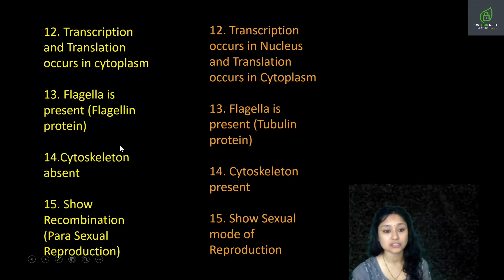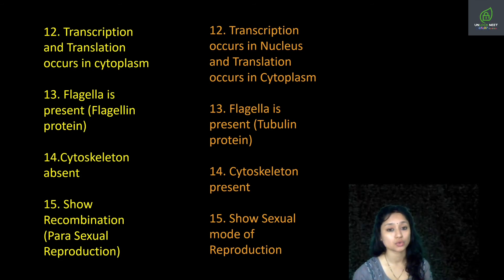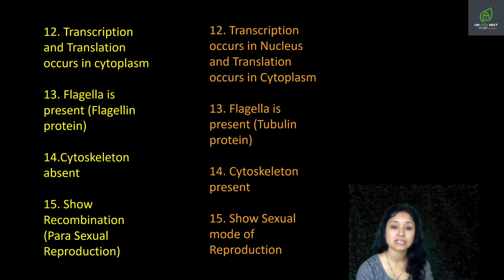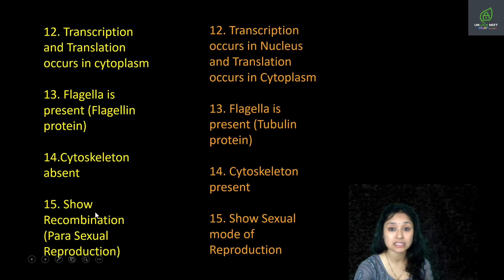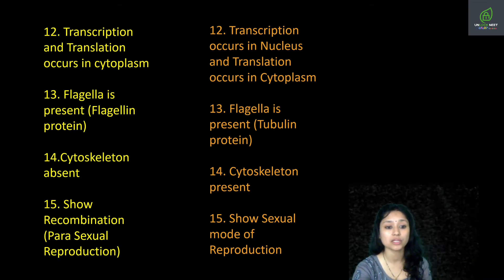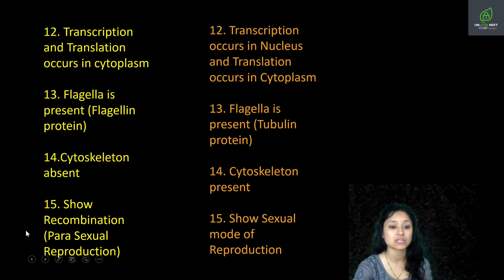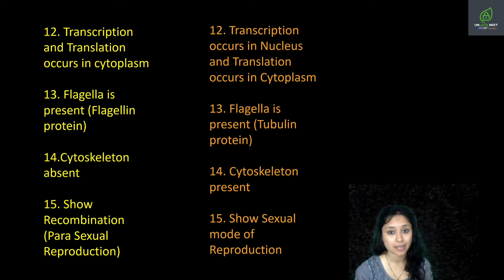Next is cytoskeleton, which acts as a skeleton and provides support to the cytoplasm. Cytoskeleton is absent in prokaryotes while it is present in eukaryotic organisms. Regarding sexual reproduction: in prokaryotes, true sexual reproduction is absent. Instead, they transfer genetic material from one bacterium to another through a process known as recombination, also considered parasexual reproduction. In eukaryotes, true sexual reproduction is present.